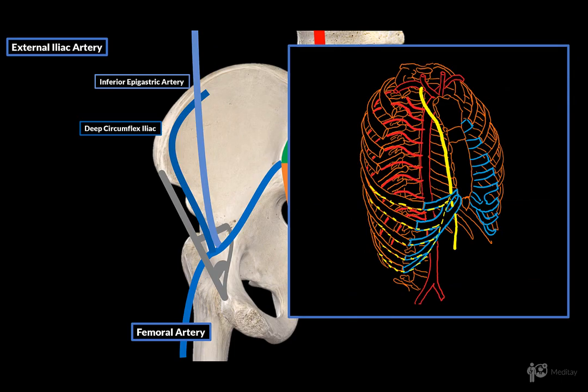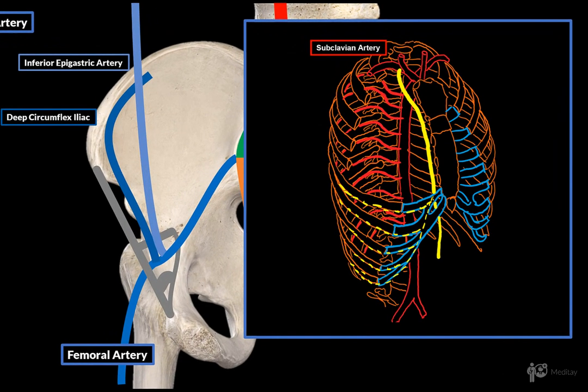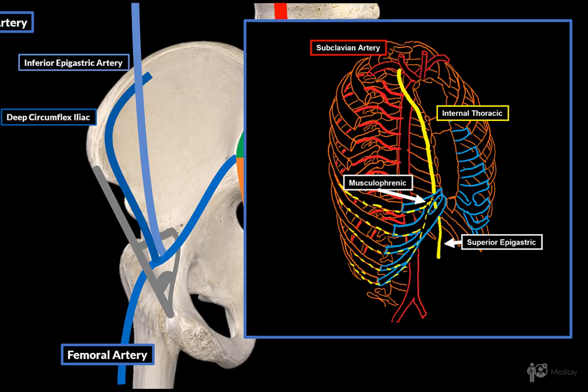The subclavian artery gives us a large side branch called the internal thoracic artery, which descends along the thoracic wall, and then at around the 7th rib, it divides into the musculophrenic and the superior epigastric artery. So here we see the inferior epigastric ascending along the anterior abdominal wall to anastomose with the superior epigastric artery.